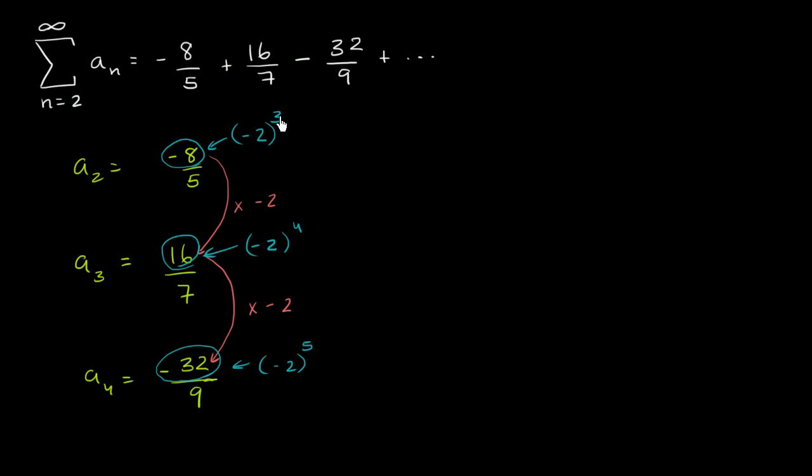So notice, our exponent on the negative 2 is always going to be one more than our index. Our index is 2, our exponent is 3. Our index is 3, our exponent is 4. Our index is 4, our exponent is 5.